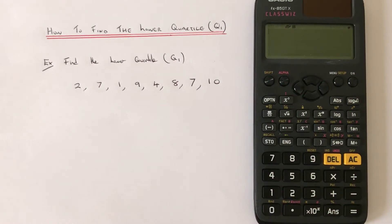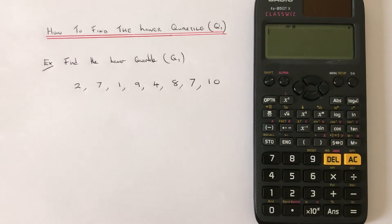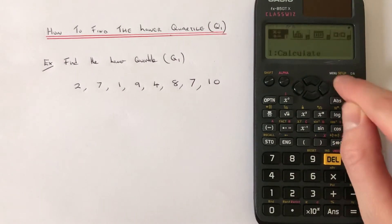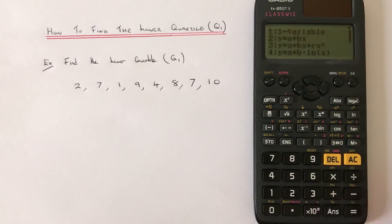Hi guys, welcome back. Today I'm going to show you how to work out the lower quartile on a Casio ClassWiz calculator. First of all, put your calculator into statistics mode: press Menu, then number two.